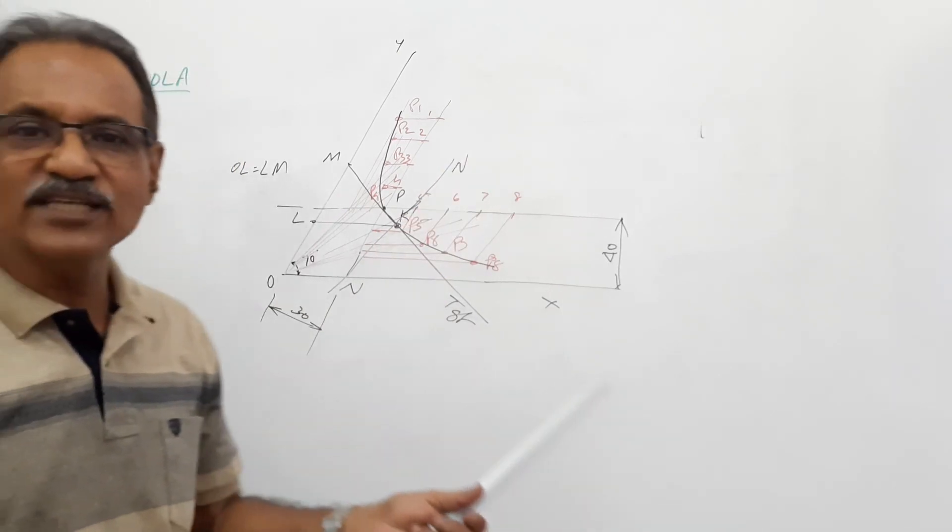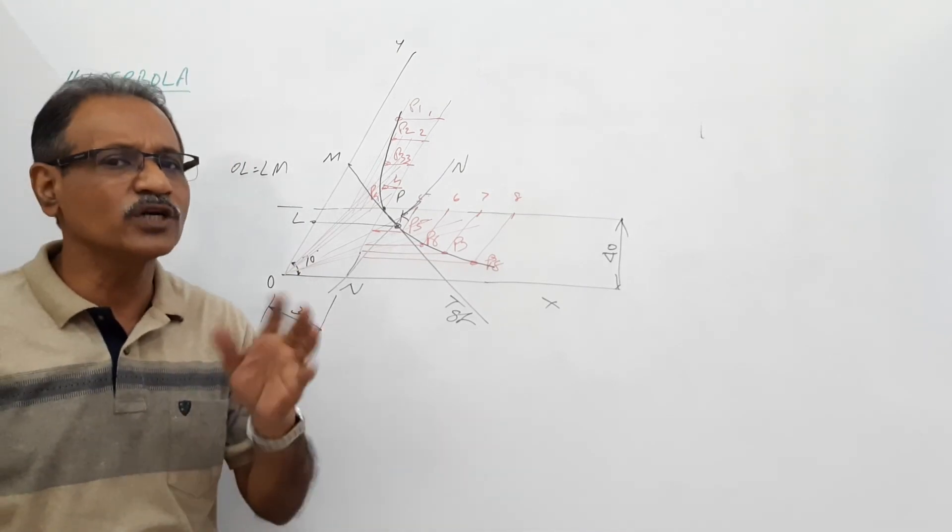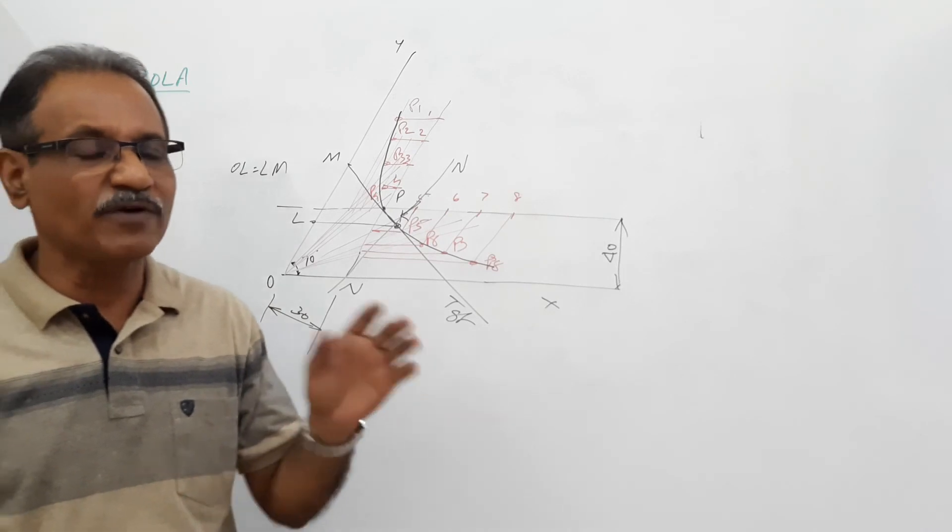So this is the case of hyperbola when the asymptotes are given. We have drawn four methods, or four types of hyperbola. One is transverse axis.